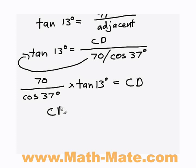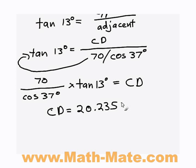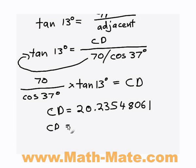Plugging those numbers into a calculator gives CD as approximately 20.23 metres. It's generally a good idea to round to two decimal places, so the final answer is 20.24 metres.